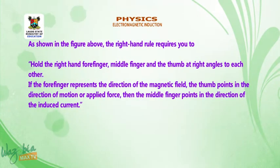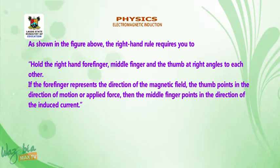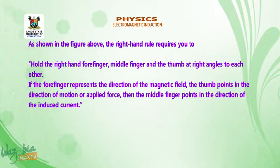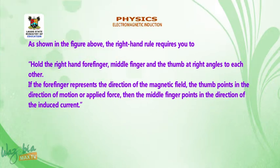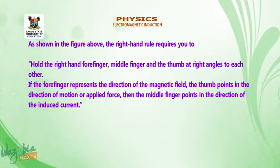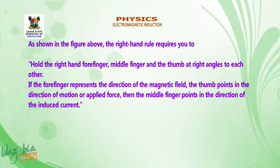As shown in the diagram above, the right hand rule requires you to: 1. Hold the right hand forefinger, the middle finger, and the thumb at right angles to each other. If the forefinger represents the direction of the magnetic field, and the thumb points in the direction of motion or applied force, then the middle finger points in the direction of the induced current.